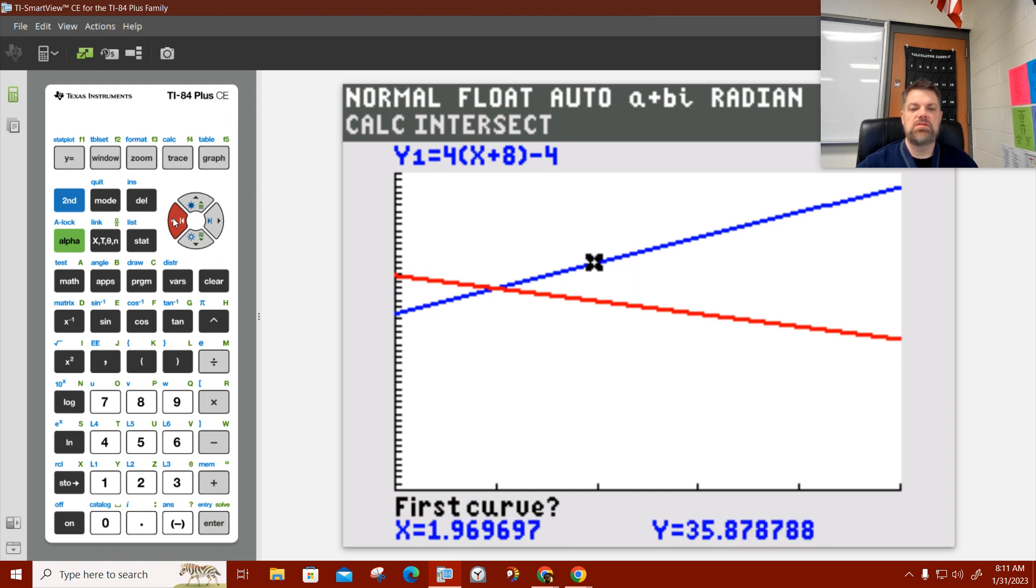So now what I want to do is I select intersect. You move the cursor till you get pretty darn close. Now we did the algebra. We know it's 1. We're just double checking to make sure that we are in fact geniuses. So I can't get right on 1. I can get close. So I hit enter. Then it'll want me to get a little closer on the red line. I'll move it a little bit. Then I can guess.